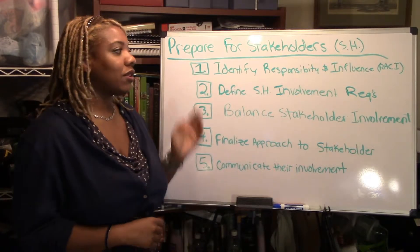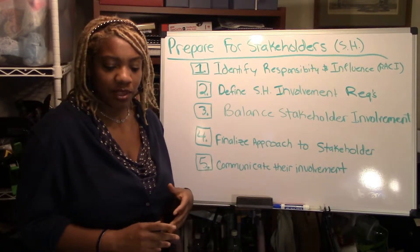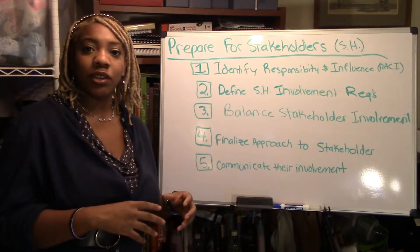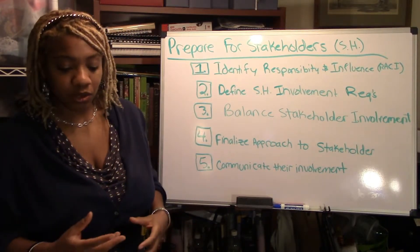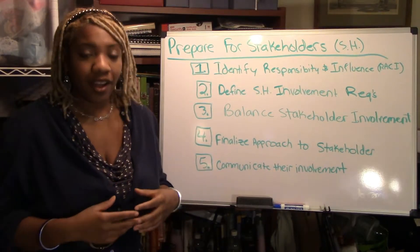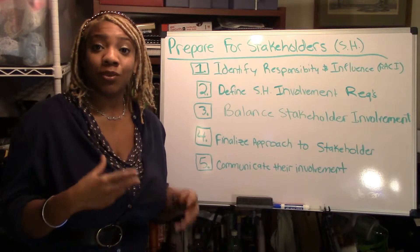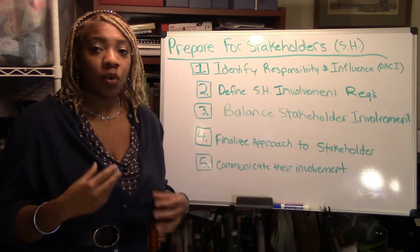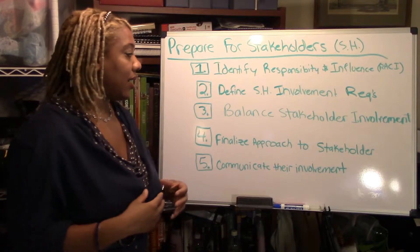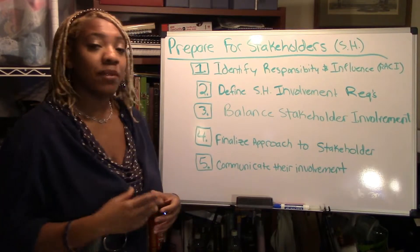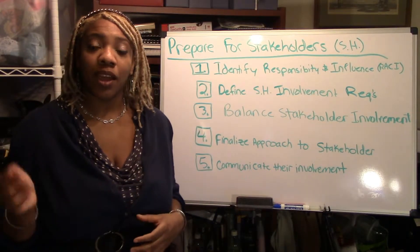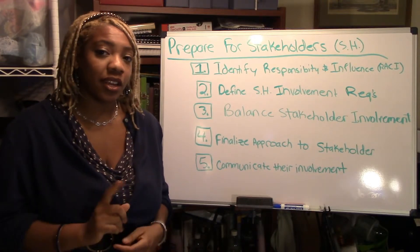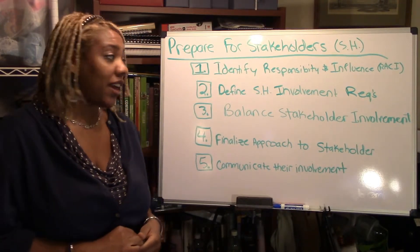Two, defining the stakeholder involvement requirements. This is about assessing the consequences of not including someone — mostly of who not to involve. So if you're not involving someone, you really need to consider what you might be missing and make sure that can be alleviated in some other way. Otherwise, you're going to have to make sure you get the data or information from them that they can provide.